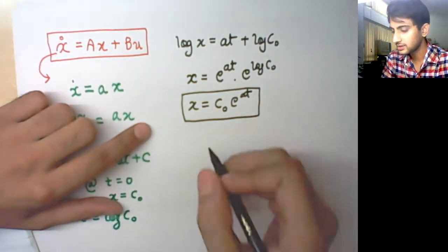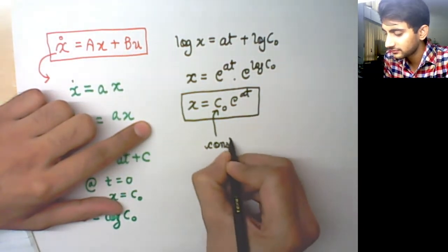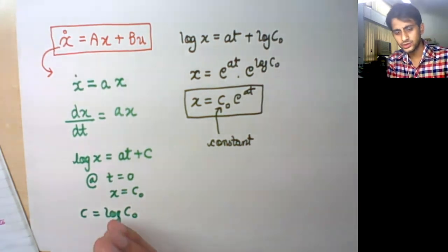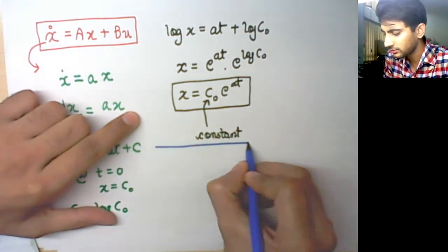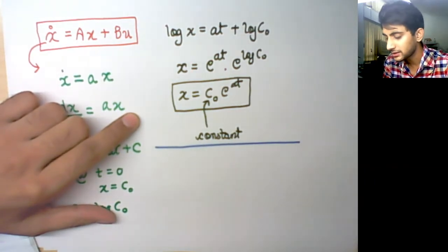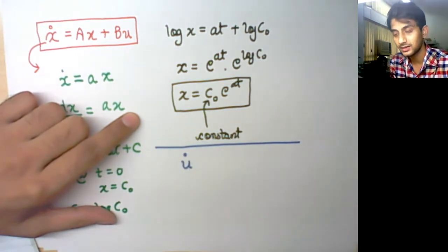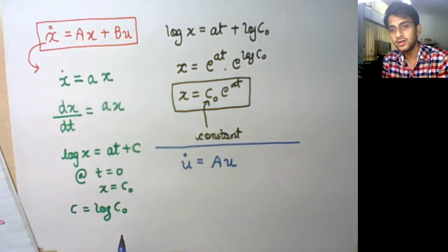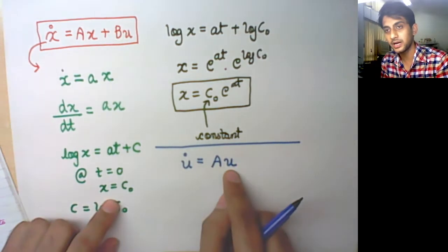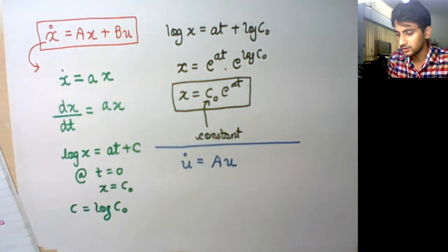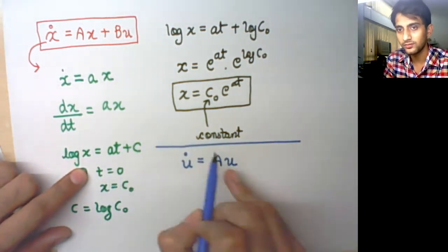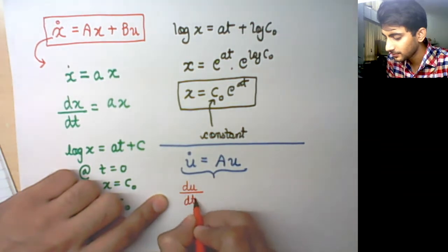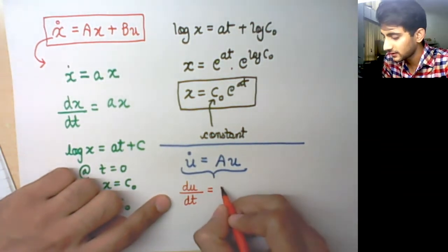In this example, c₀ is a constant scalar. A similar approach can also be applied on a system of differential equations with matrices. For example, it is given that u_dot, where u is a vector, equals Au, so the time derivative of the vector equals a matrix A multiplied by the vector u.